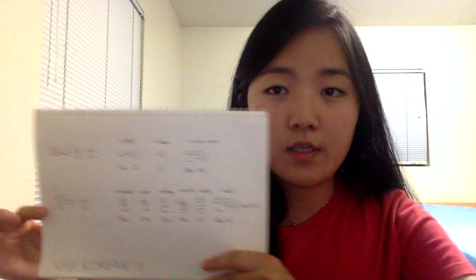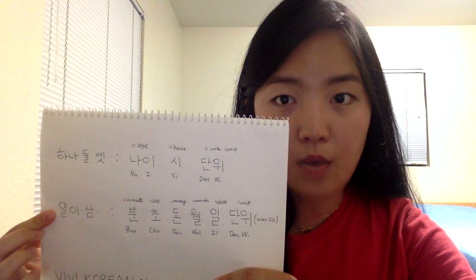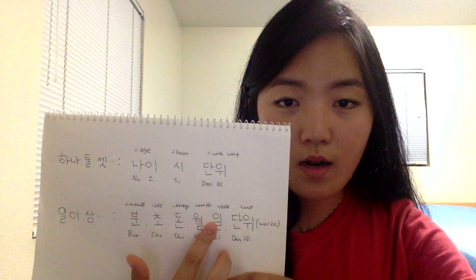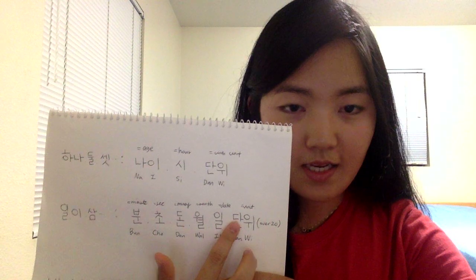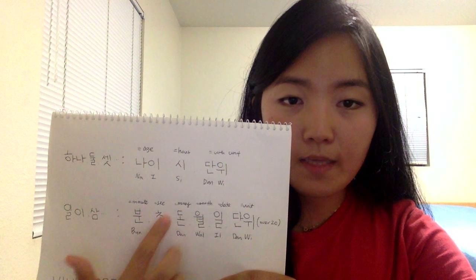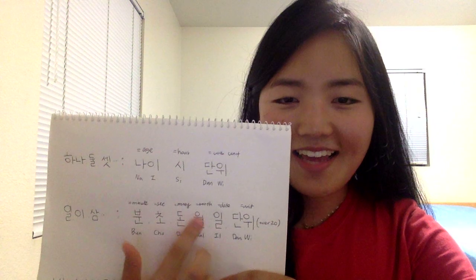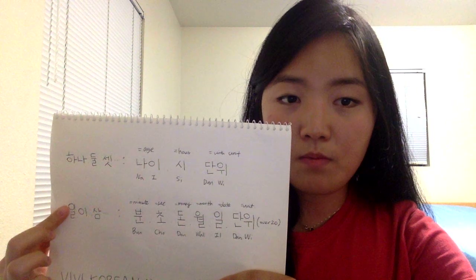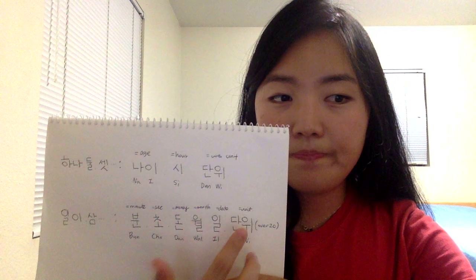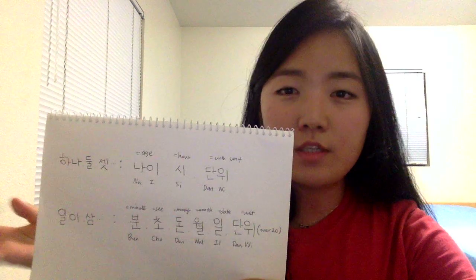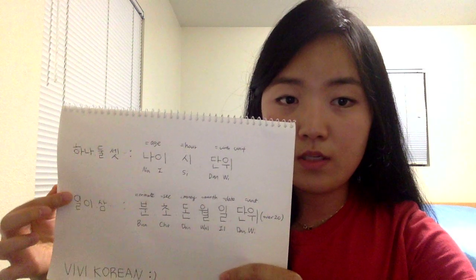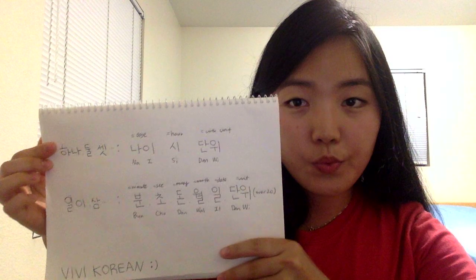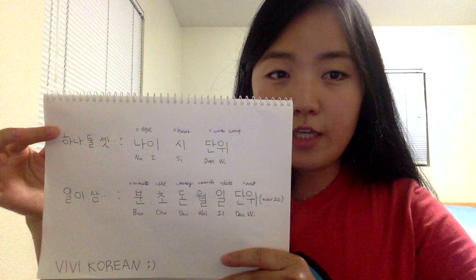On the other hand, for the other set of numbers — 일, 이, 삼, 사, 오, 육, 칠, 팔, 구, 십 — we usually use these for 분 (minutes), 초 (seconds), 돈 (money), 월 (month), 일 (date), and also with units. But usually this set is used when the number is over 20. For bigger numbers we use this set, though you can also use either set in some cases.